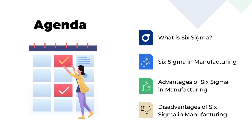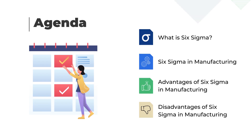We will start our session by understanding what Six Sigma is and learn how Six Sigma is used in the manufacturing industry. Moving on, we will discuss in detail about various Six Sigma implementations in the manufacturing industry along with its advantages and disadvantages.